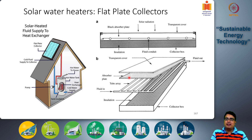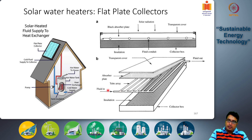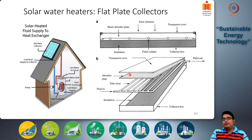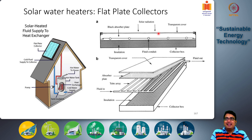Sunlight falls on the absorber plate, which heats up by absorbing sunlight. Tubes installed below the plate carry fluid, which absorbs heat from the absorber plate as it flows through, and hot fluid comes out on the other end. Above the absorber plate is an empty space topped by a transparent glass cover — the presence or absence of this glass cover defines glazed versus unglazed collectors.